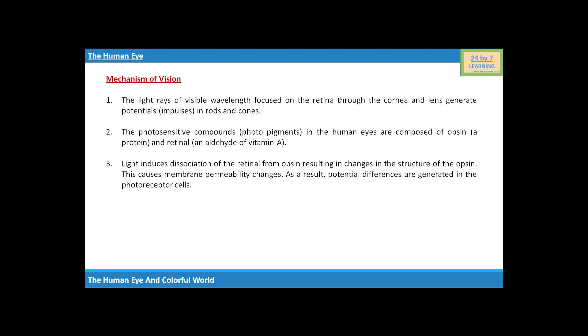Light induces dissociation of the retinal from opsin resulting in changes in the structure of the opsin. This causes membrane permeability changes. As a result, potential differences are generated in the photoreceptor cells.